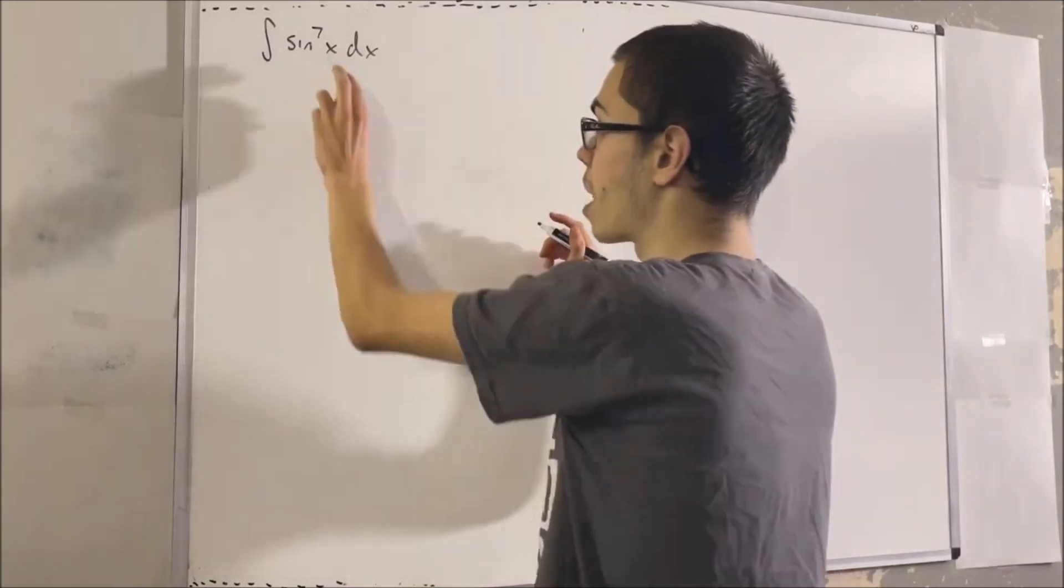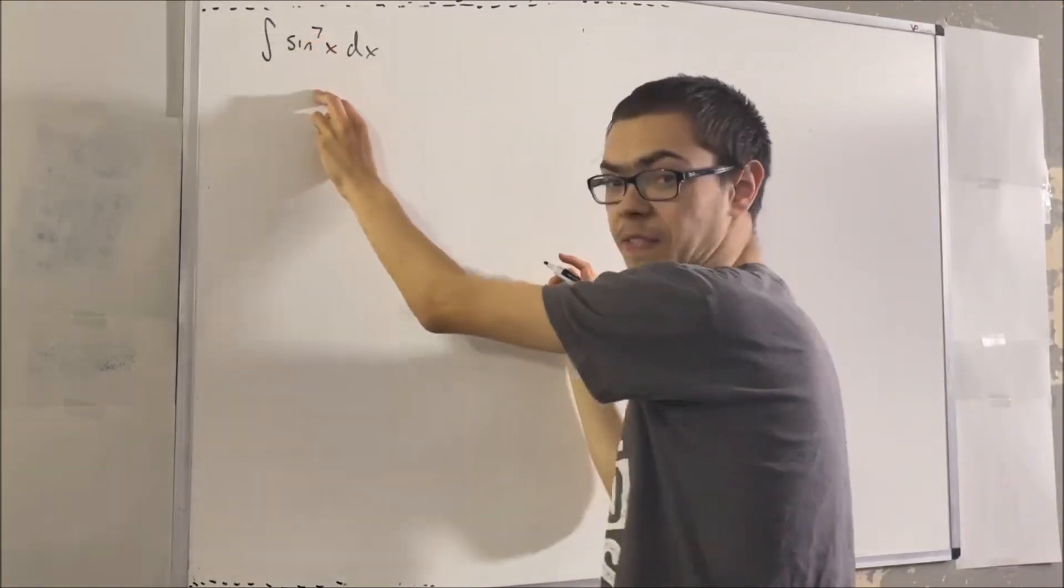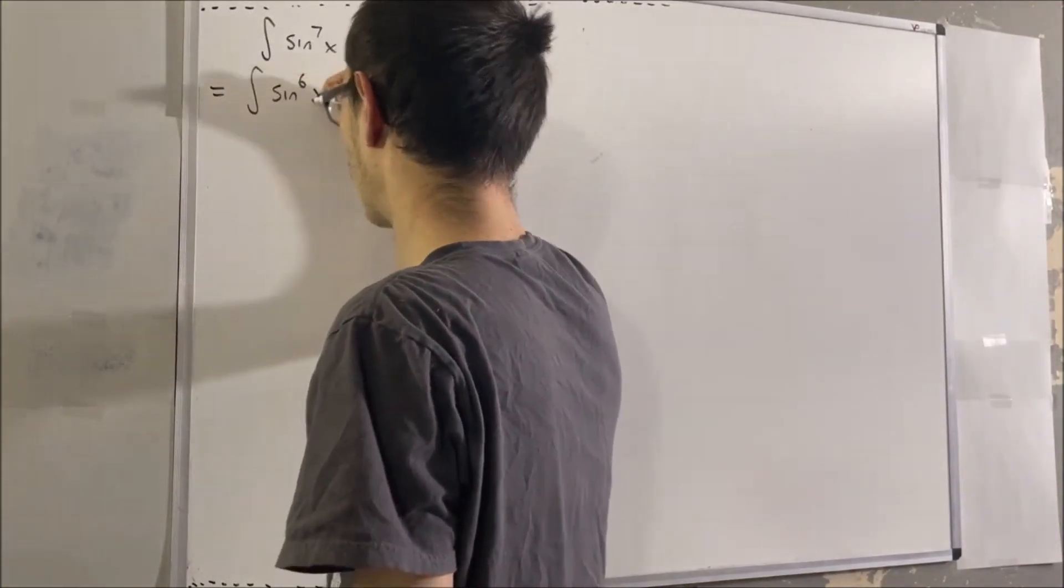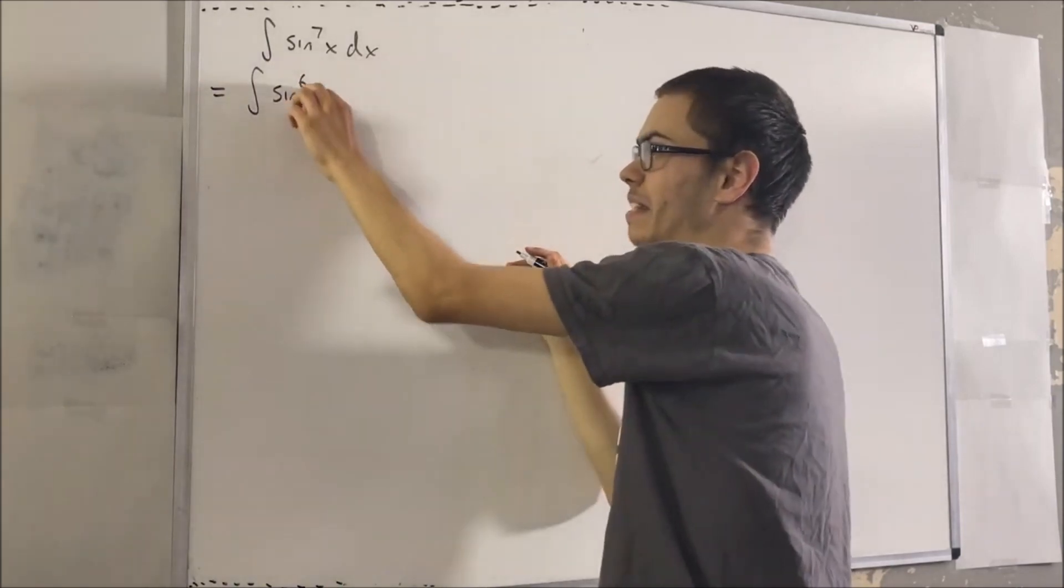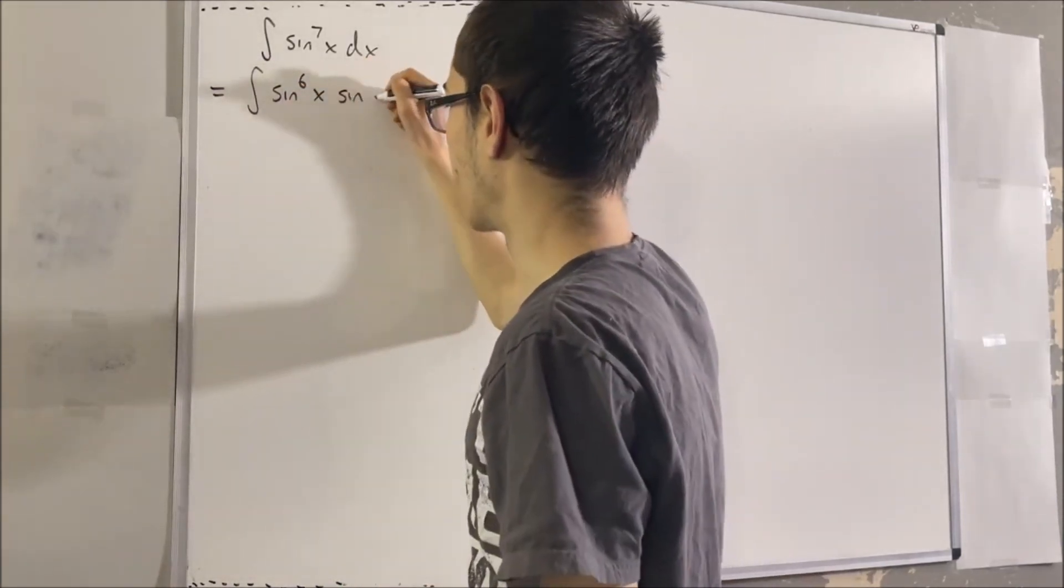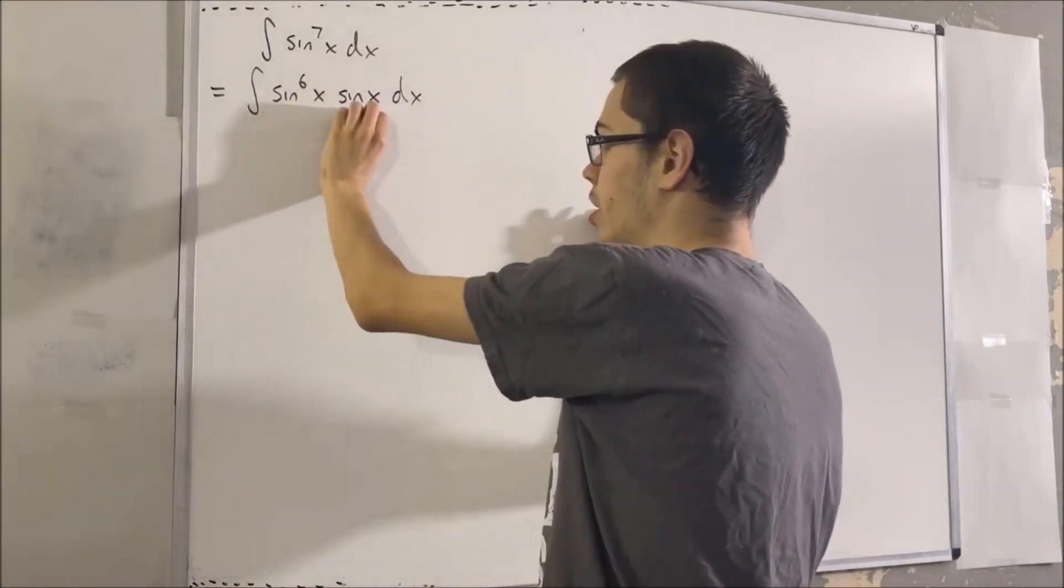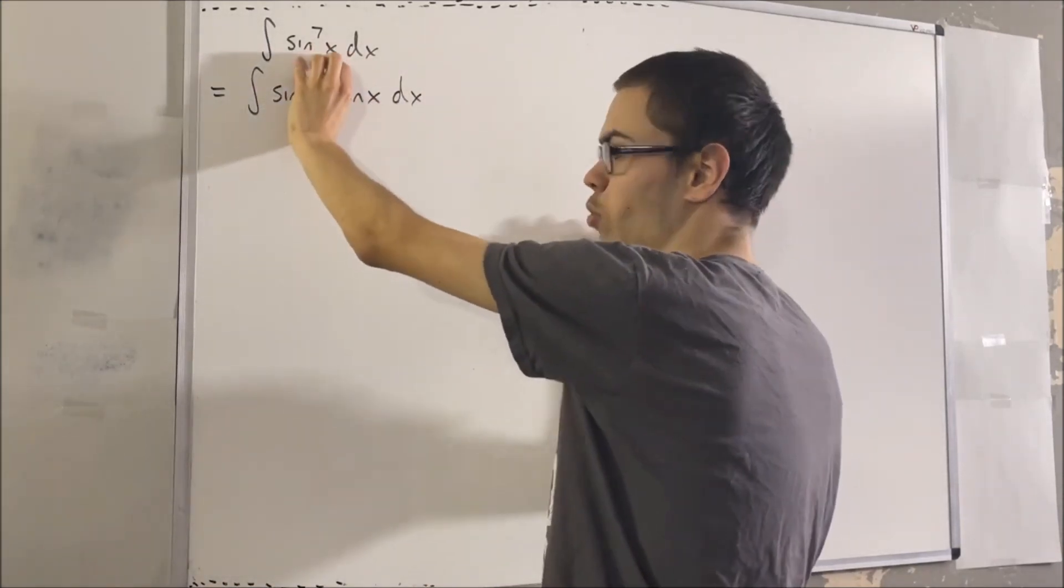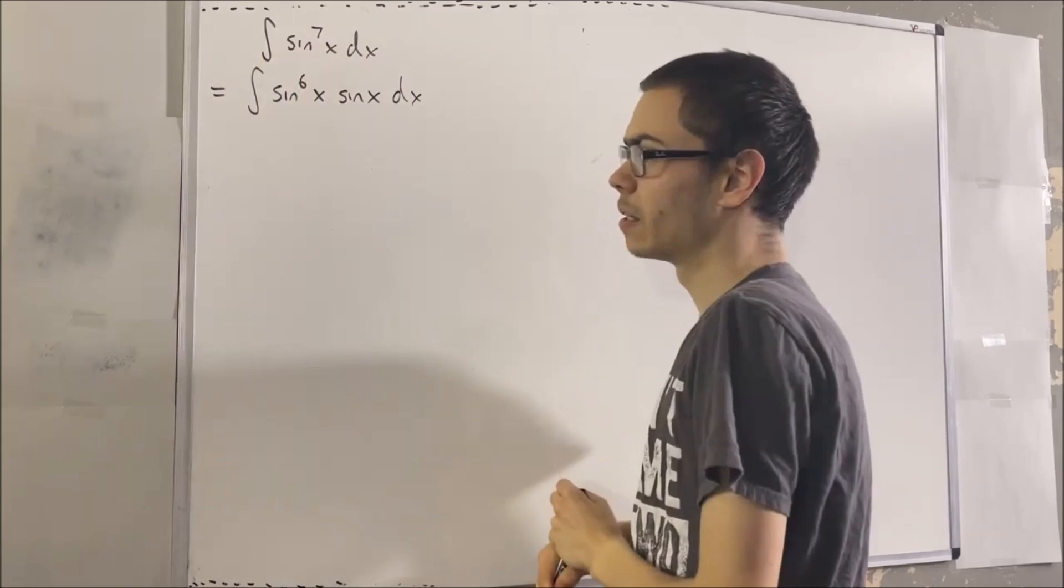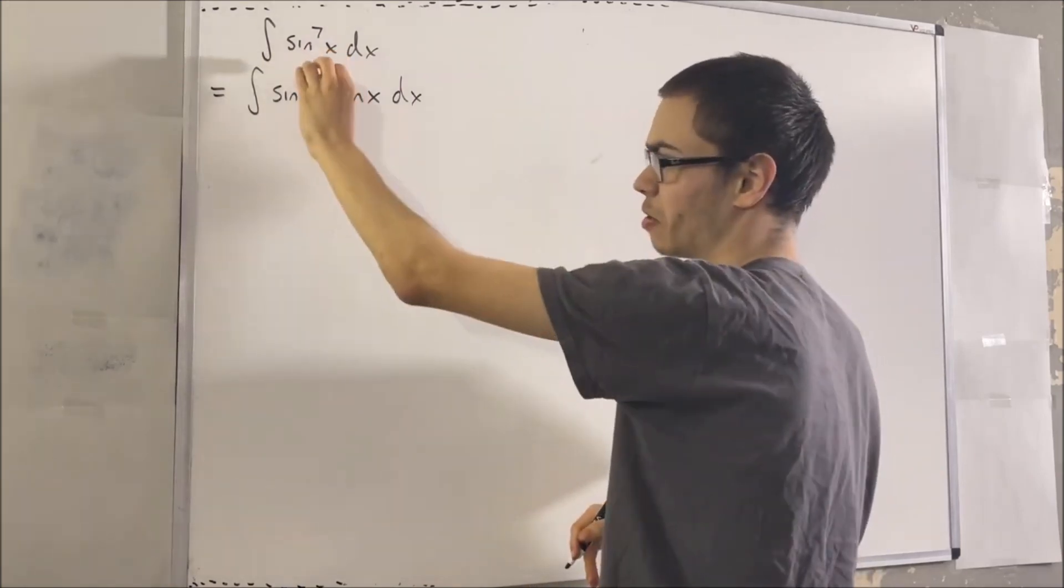What we're going to do is we are going to drop the power of 7 to a power of 6. That leaves us with sine to the 6th of x, but we still have to multiply sine x onto that, so that when we multiply these two, it's still equivalent to what we have originally. So then why do we have this written like this?